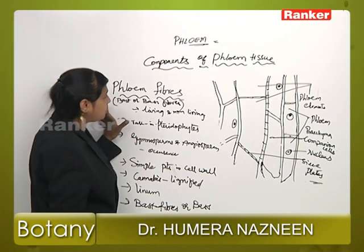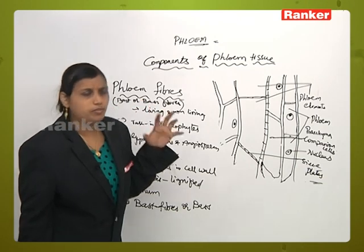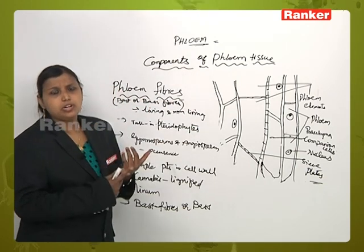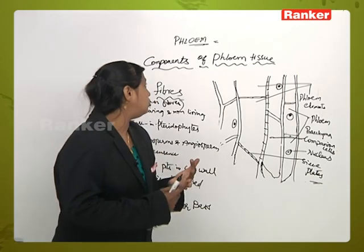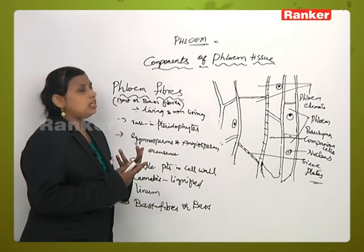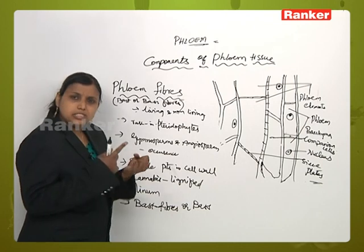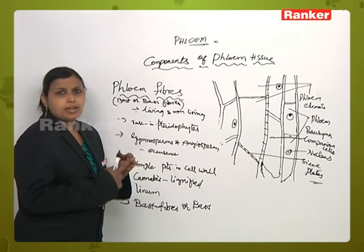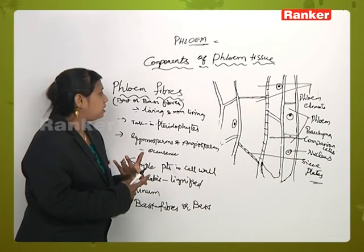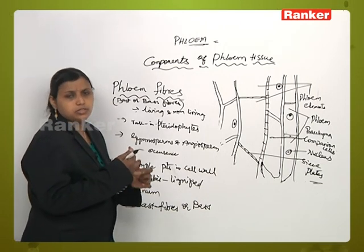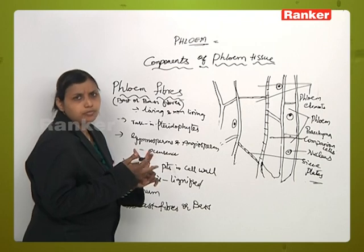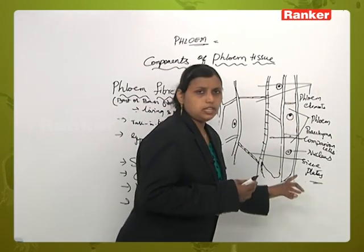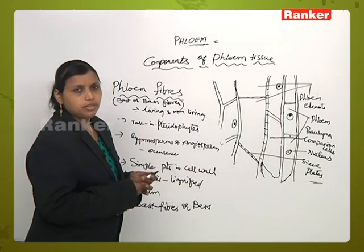This ends the topic of phloem tissue. To summarize what we have learned: phloem is also called leptome and is the food-conducting tissue. Its components include sieve elements — within which there are sieve cells and sieve tubes — companion cells, albuminous cells, phloem parenchyma, and phloem fibers.